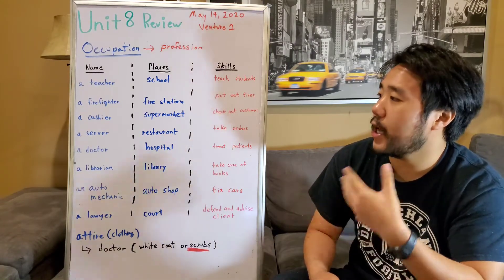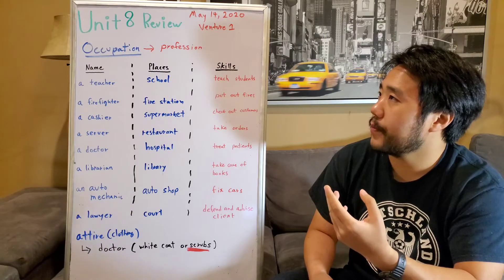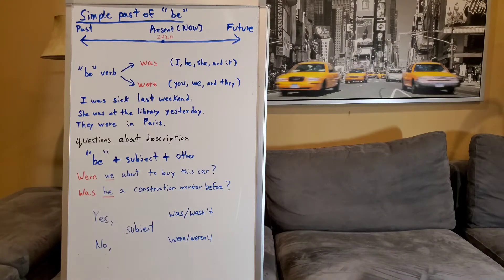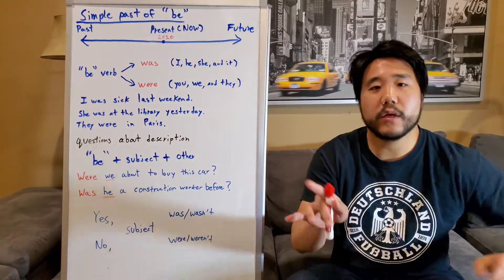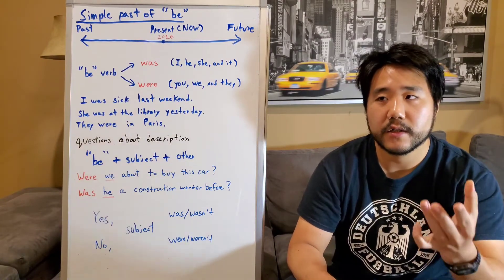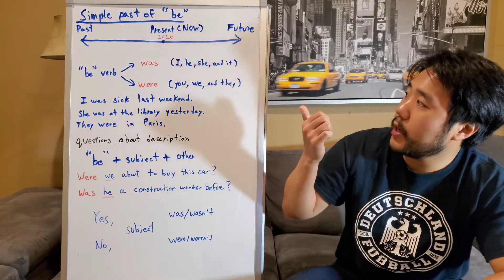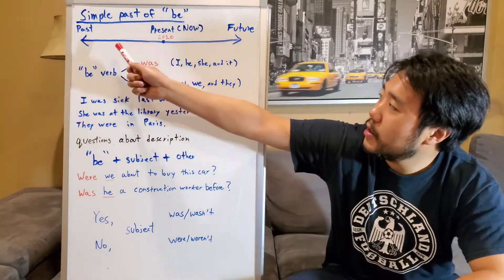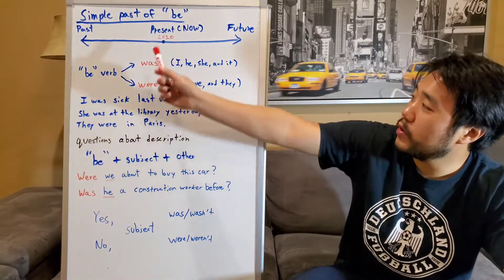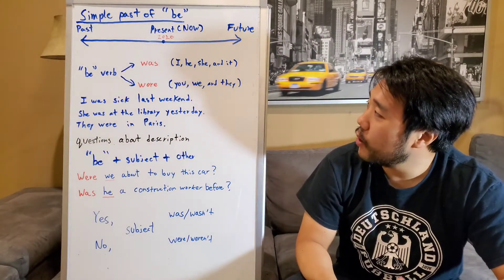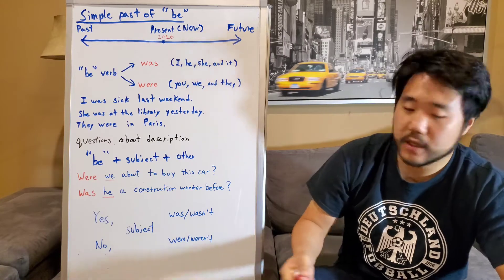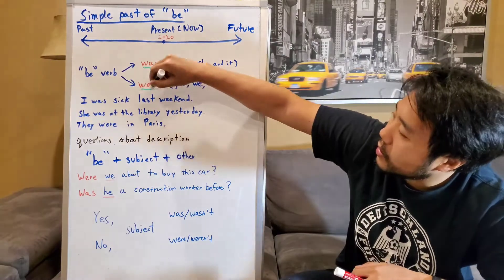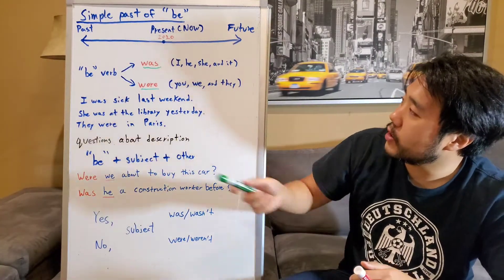Now that we've talked about occupations, we're going to talk about grammar — specifically 'was' and 'were.' After learning about common occupations, we talked about the simple past of 'be.' I drew a timeline showing past, present — which is right now, 2020 — and the future.